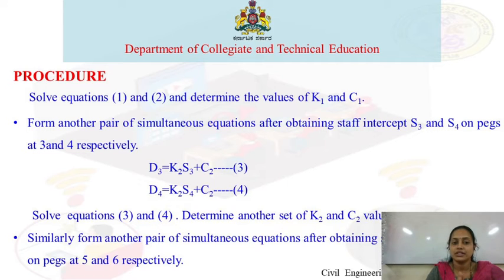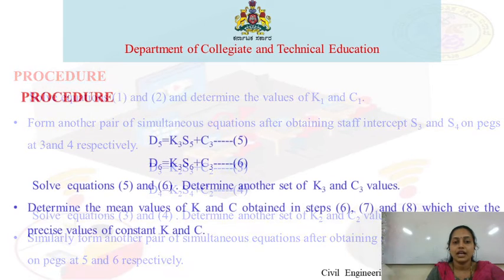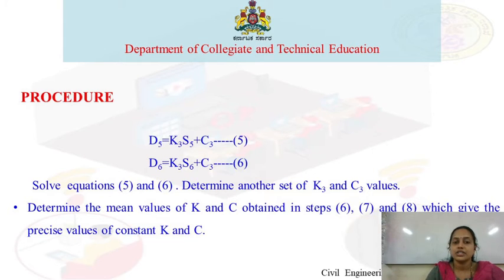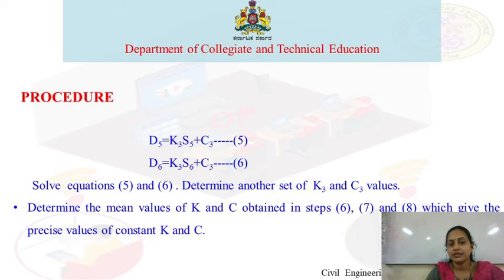For the third set of observations, substitute D5, D6, S5, S6 values to form simultaneous equations 5 and 6. Solve these equations to get K3 and C3.